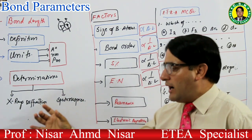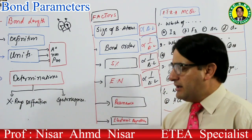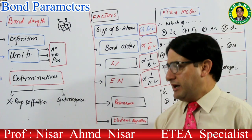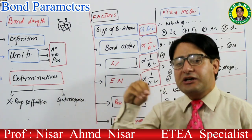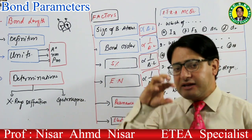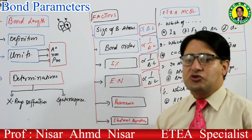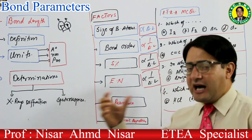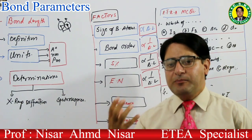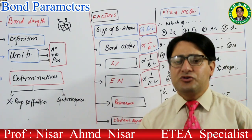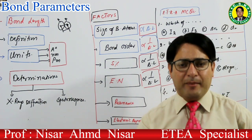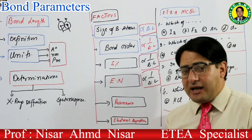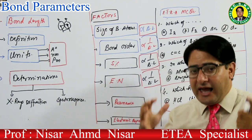Bond length کو X-ray diffraction سے measure کرتے ہیں یا spectroscopy سے measure کرتے ہیں۔ X-ray diffraction اس وقت use کرتے ہیں جب molecule یا compound crystalline ہو۔ Spectroscopy normally اس وقت use کرتے ہیں جب molecule gaseous form میں ہو، liquid form میں ہو، یا amorphous solid ہو۔